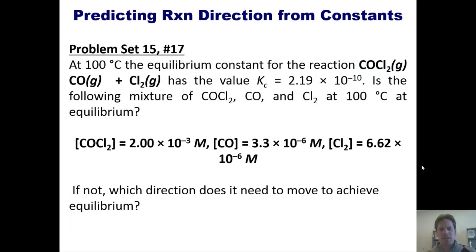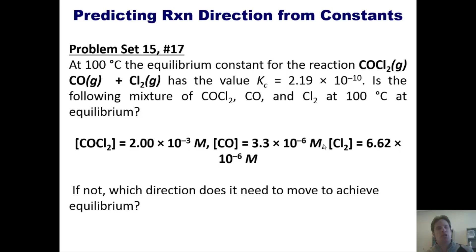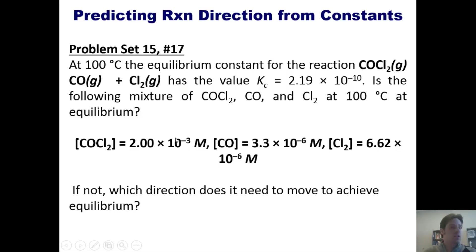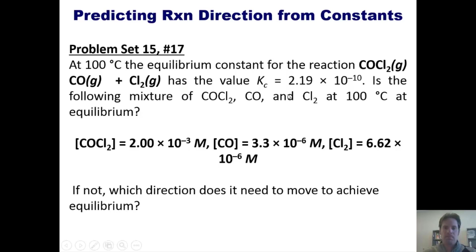That takes us to a wonderful problem. At 100 degrees Celsius, the equilibrium constant for this reaction has a value KC equal to the given number. Is the following mixture of these different ingredients at equilibrium, given their individual concentrations? If not, in what direction does it need to shift to achieve equilibrium? I won't do this for you, but I'll give you some counsel. Determine the QC expression, plug in each value, then determine if your QC is greater than, equal to, or smaller than KC, and from that determine which direction the reaction needs to shift.